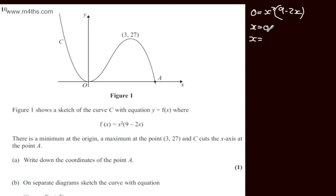Or we'd have x is equal to 9 over 2. Therefore, we can state now that A will have the coordinates 9 over 2 comma 0. So one mark for writing down the coordinates of the point A.